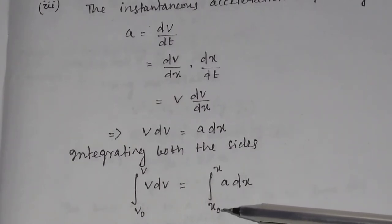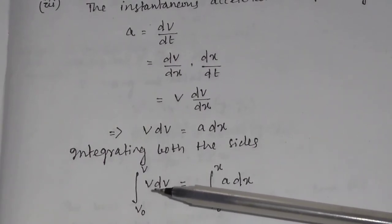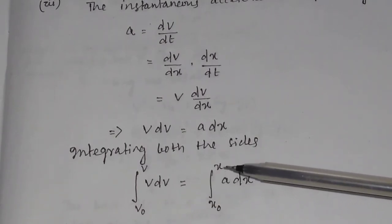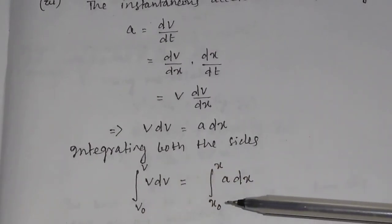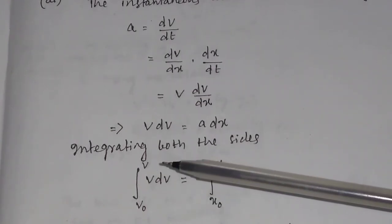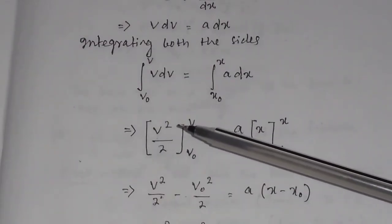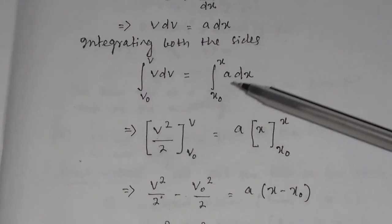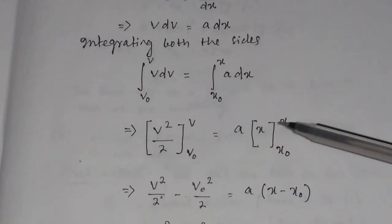When x equals x₀ (the initial displacement), the velocity is equal to V₀ (the initial velocity), and when x equals x (the final displacement), V is the final velocity. So we integrate V from V₀ to V on the left, and x from x₀ to x on the right. Integration of V dV equals V²/2, evaluated from V₀ to V. A is constant so it comes outside, and integration of dx is x, evaluated from x₀ to x.